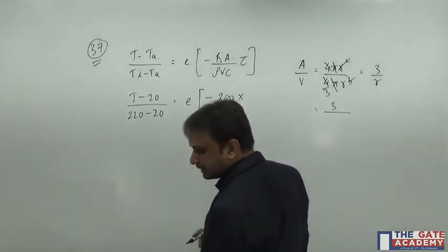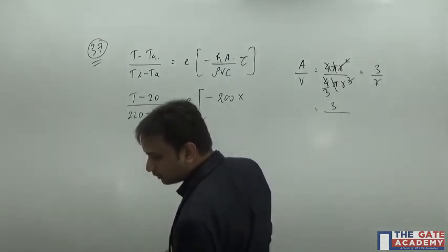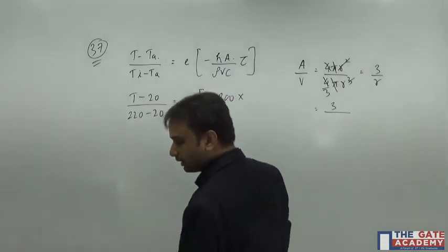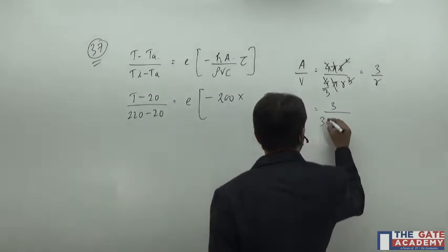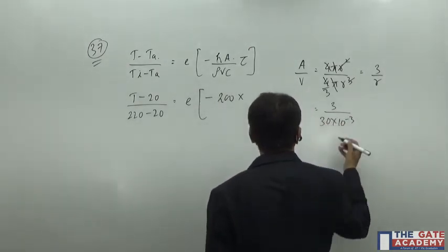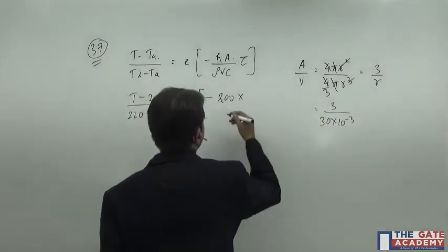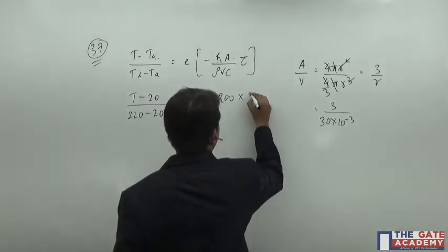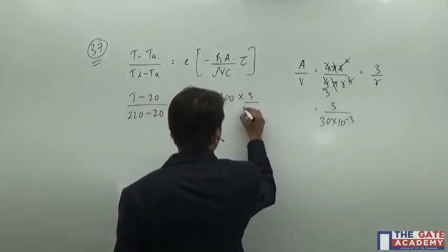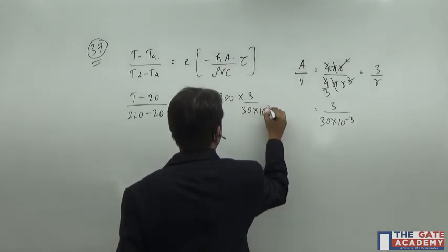So 3 by, and what is D? What is R? It is going to be 30. So 30 into 10 to the power minus 3, converting into meters. So it will be 3 divided by 30 into 10 to the power minus 3.